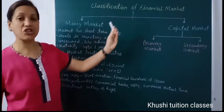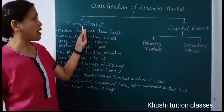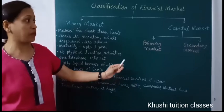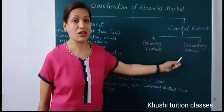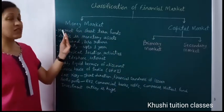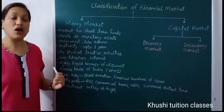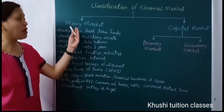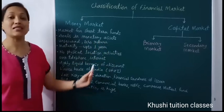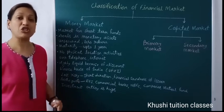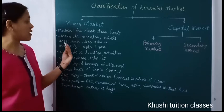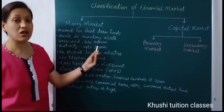Financial market can be divided into money market and capital market. Money market is for short periods and capital market is for medium and long periods. Capital market can be further divided into primary market and secondary market. Money market instruments are for short term periods — they are issued by companies and institutions that need funds for short periods. These instruments deal in monetary assets such as treasury bill, commercial bill, commercial paper, call money, and certificate of deposit. These instruments are unsecured and there is less return on them.